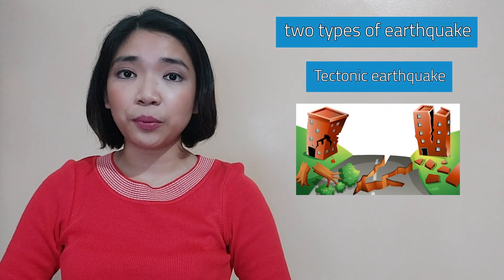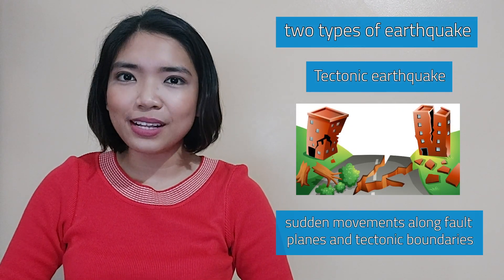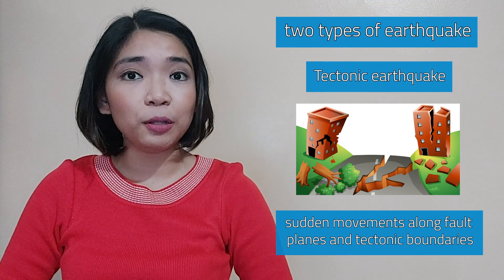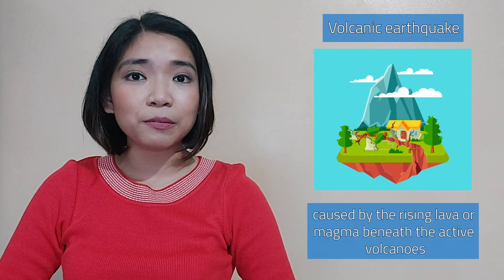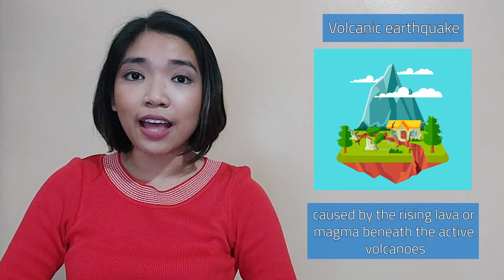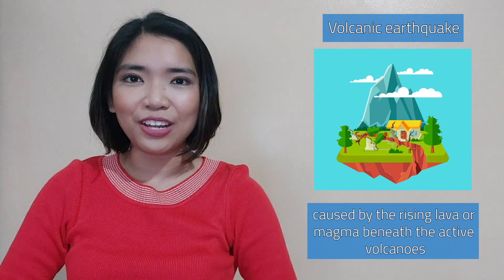There are two types of earthquakes. The first is tectonic earthquake, which are produced by the sudden movements along the fault planes and tectonic boundaries. And the second is volcanic earthquake, which is caused by the rising lava or magma beneath the active volcanoes.